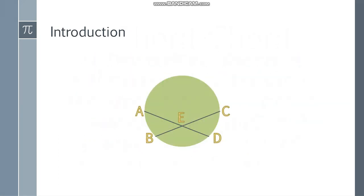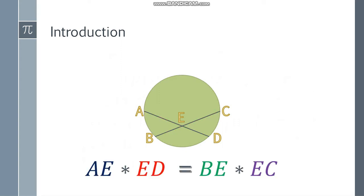So let's just have some examples. Here's what it looks like - you have two chords. Now, the formula we're going to use here is this segment, AE, multiplied by segment ED, is equal to the product of BE and EC.